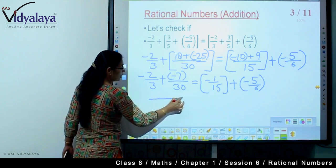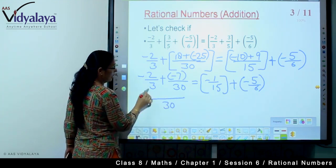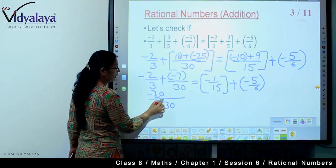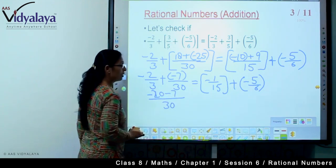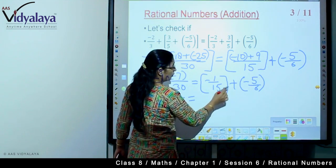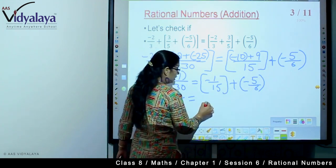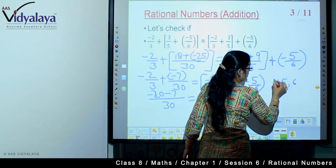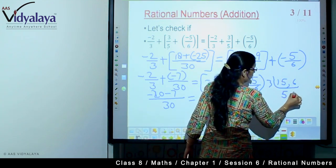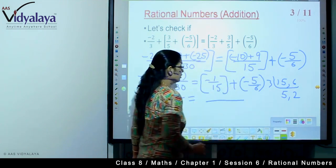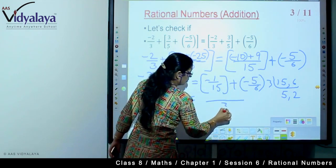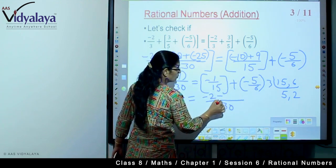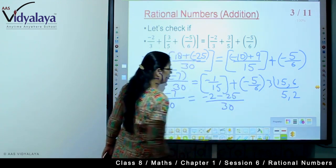Again we have fractions. We will take the LCM. 3 tens are 30, so we multiply by 10. Here we have 15 and 6. So our LCM is 30. 15 twos are 30 means this becomes minus 2, and 6 fives are 30 means minus 25.